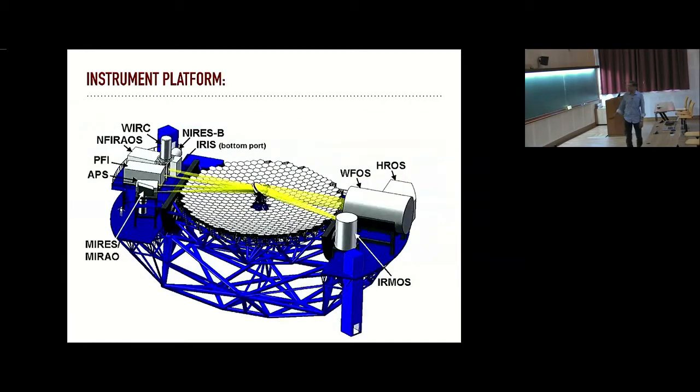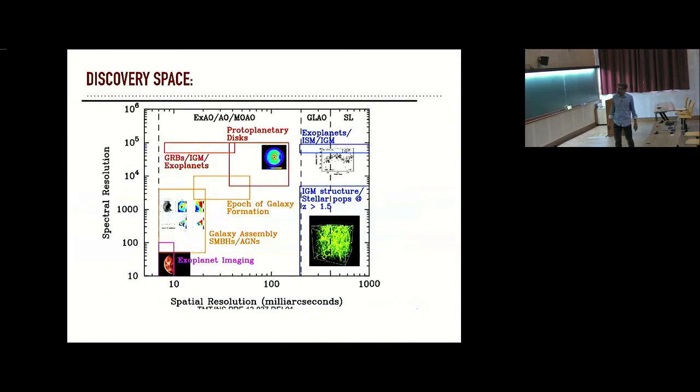So, what are the kind of configuration one is talking about? Basically, these are the identified instruments now. Nothing is finalized because we are talking about doing science in over 20 to 30 years. But tentatively one has identified what kind of instrument should go in. There are 10 identified instruments which will eventually come in with the phase of three years durations. What kind of space one is, discovery space one is going to probe? We are going to be spatial resolutions of something like 10 milli-arc seconds to a few arc seconds. And spectral resolutions which will vary from simple imaging up to some high resolution spectroscopy.